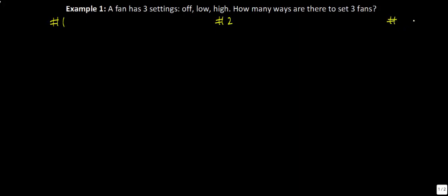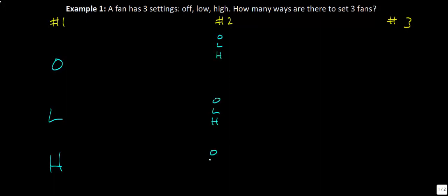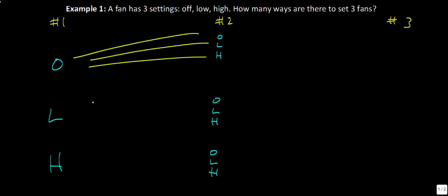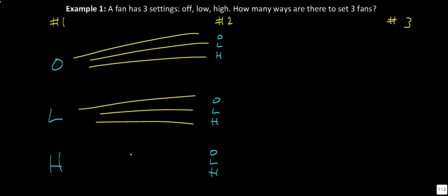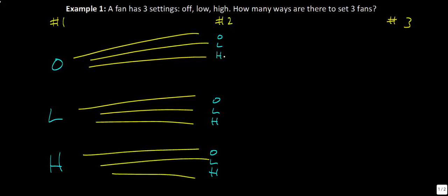So if we call this fan number one, fan number two, and fan number three, let's look at what we could possibly have. For the first fan, we have three possible settings: off, low, and high. Each of those maps on to three different settings for the second fan — off, low, high for each. So if there were only two fans, we would have nine different possibilities: three times three.